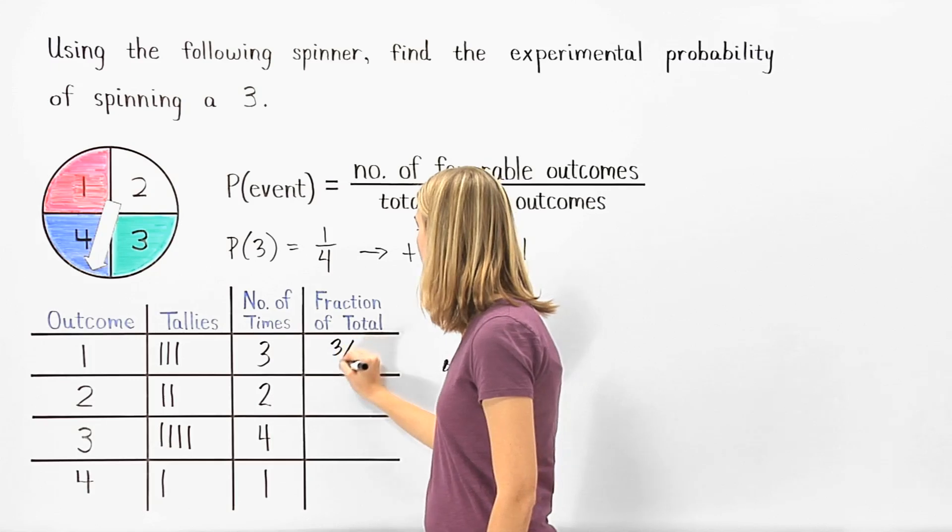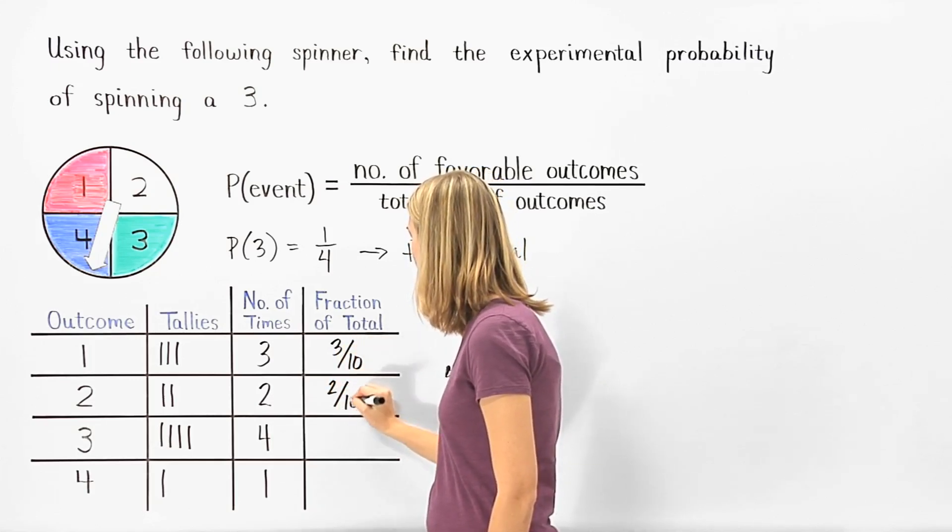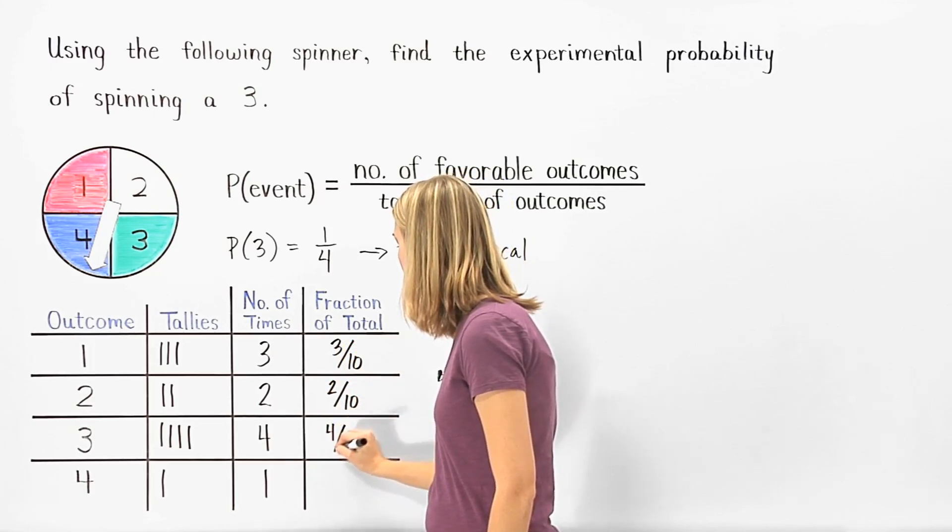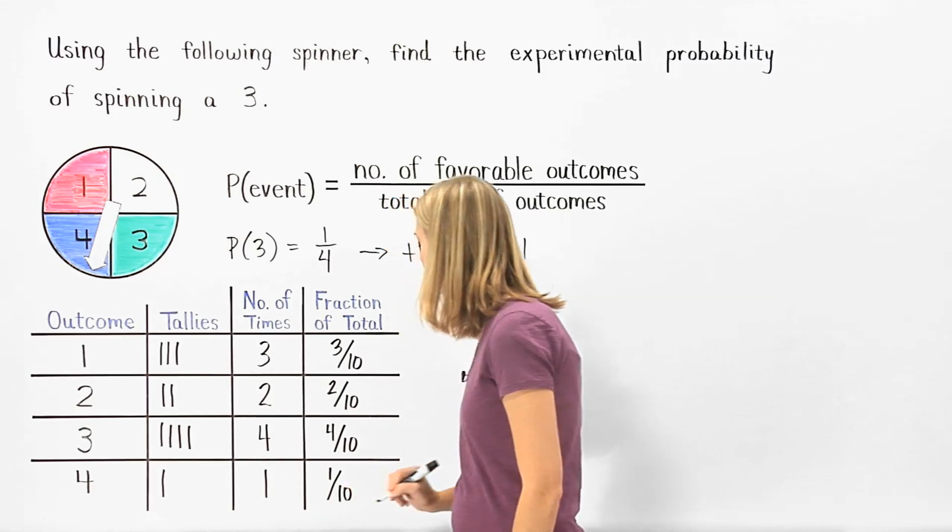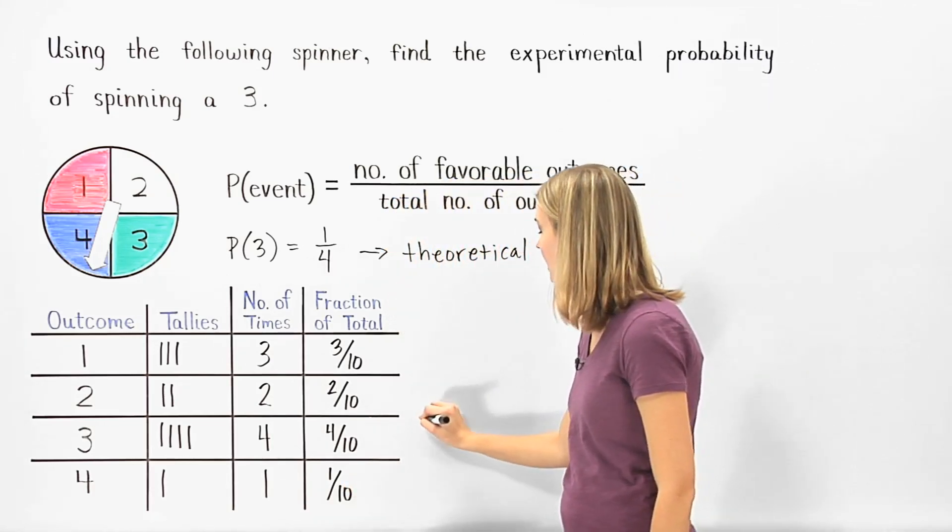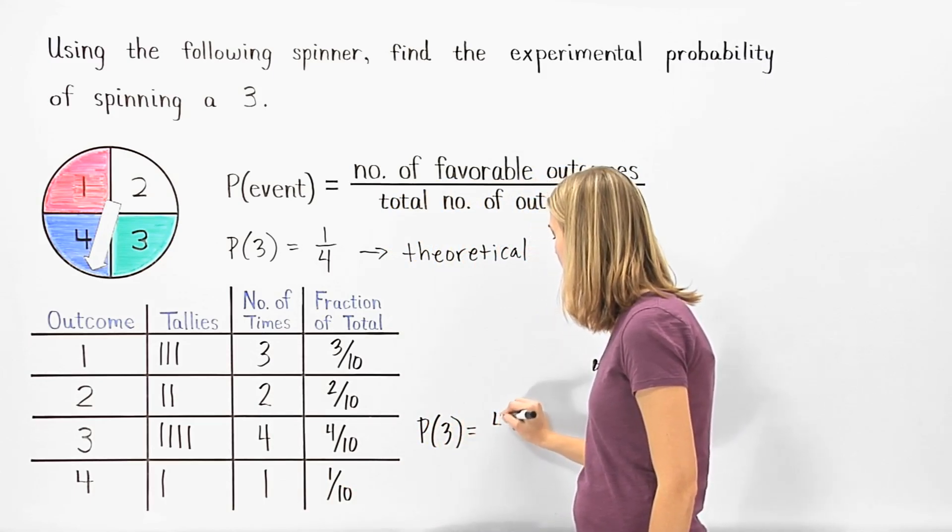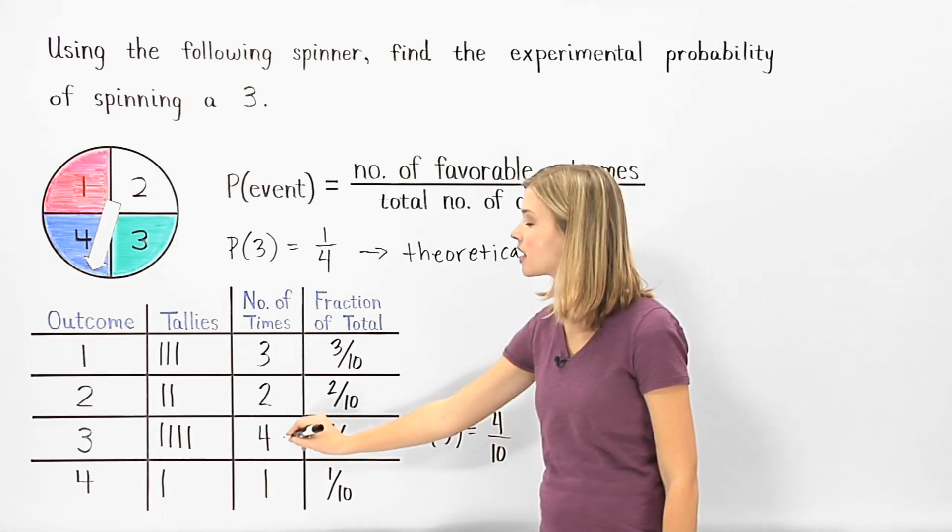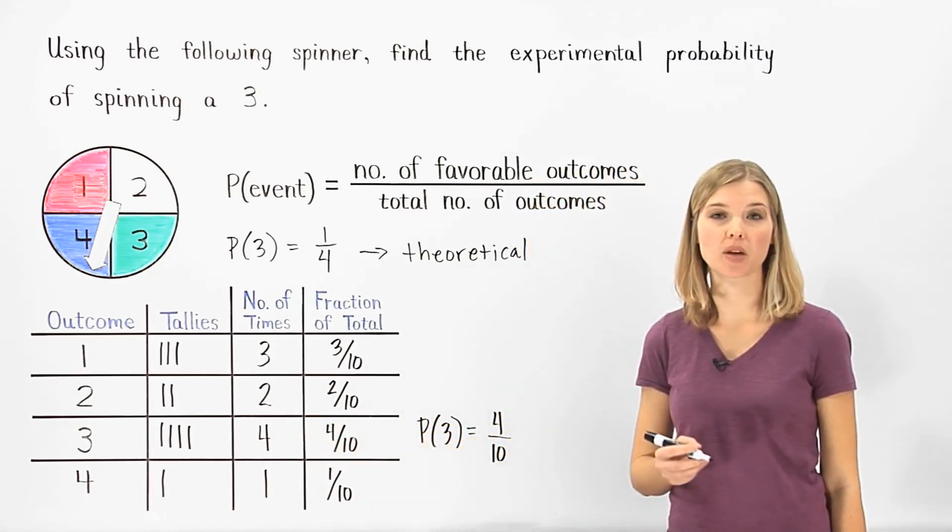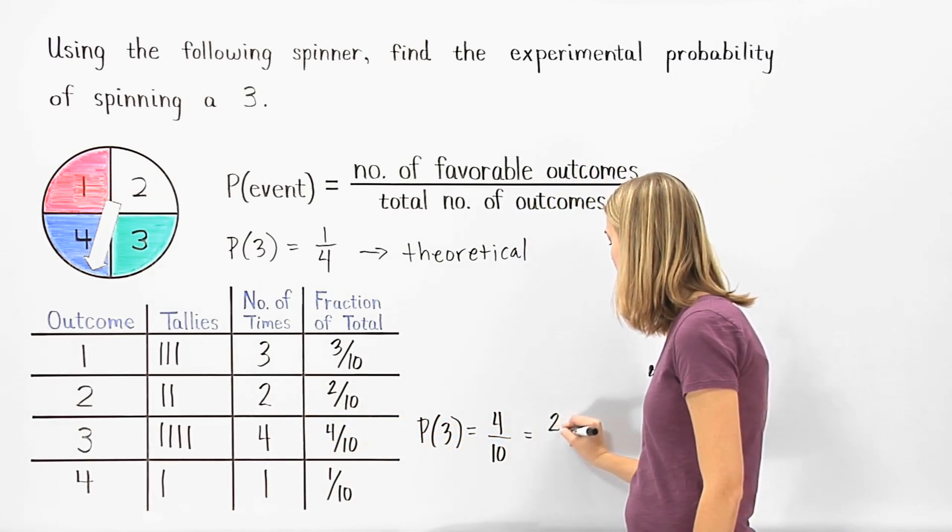So we have 3 over 10, 2 over 10, 4 over 10, and 1 over 10. Now we can see that the experimental probability of spinning a 3 was 4 tenths. Because we spun a 3 four times, out of a total of 10 spins. Notice that 4 tenths reduces to 2 fifths.